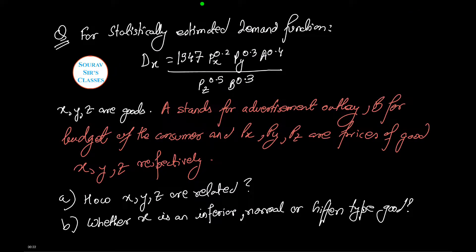For the statistically estimated demand function: Dx equals 1547 multiplied by Px to the power 0.2, Py to the power 0.3, and A to the power 0.4, divided by Pz to the power 0.5 and B to the power 0.3, where A stands for advertisement outlay and B for budget of the consumer, and Px, Py have their usual meanings.